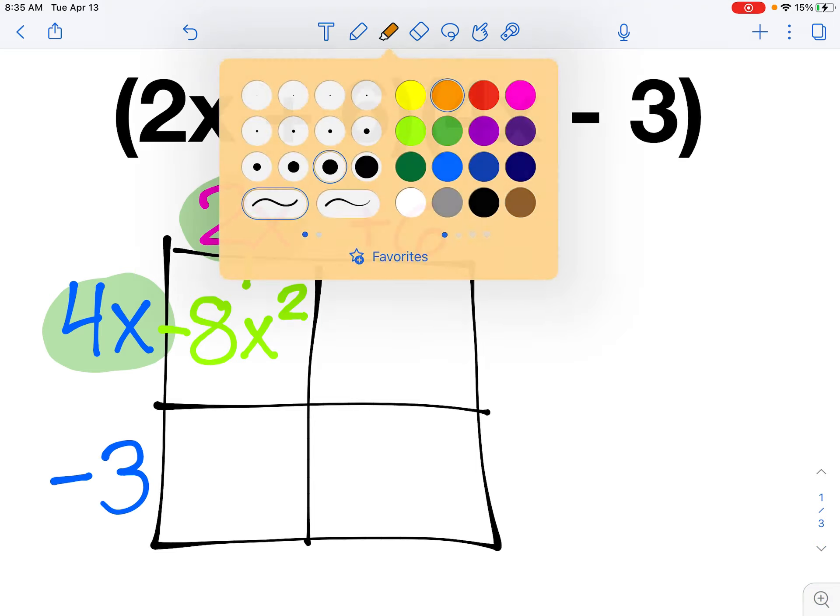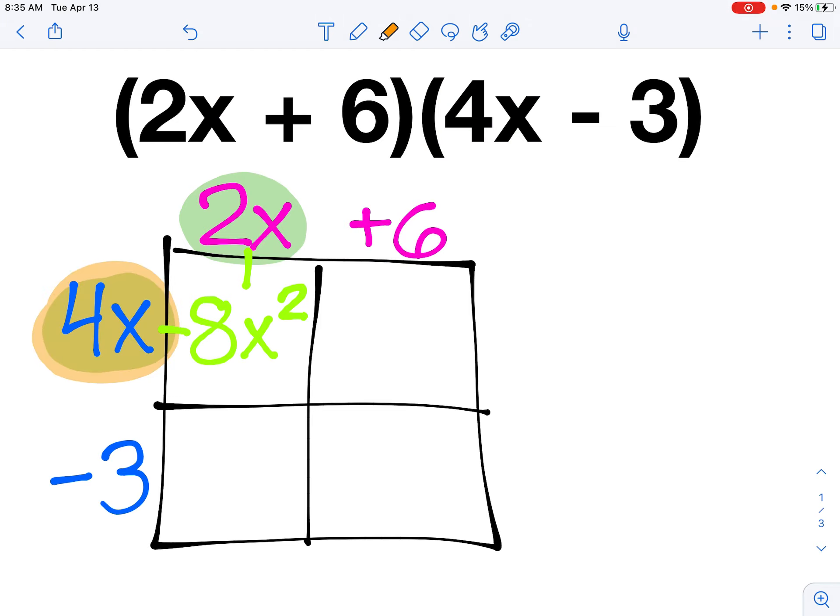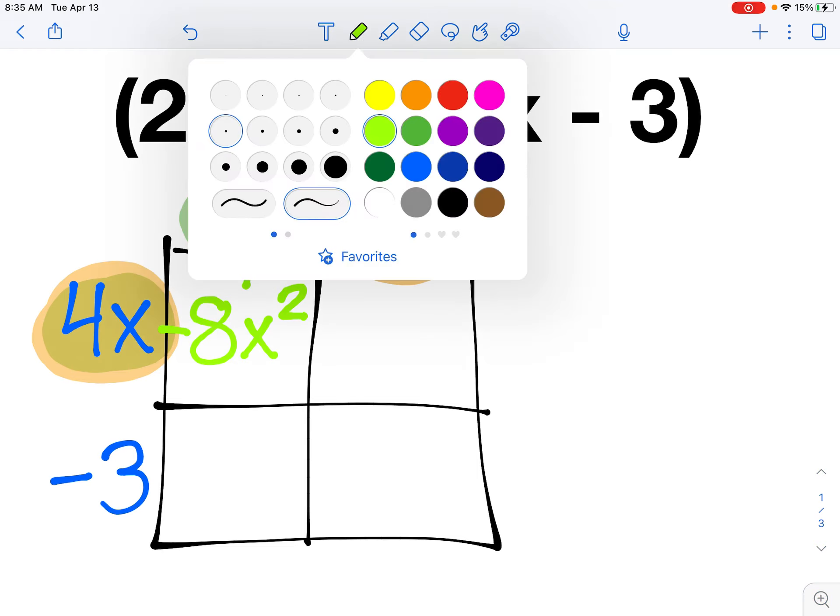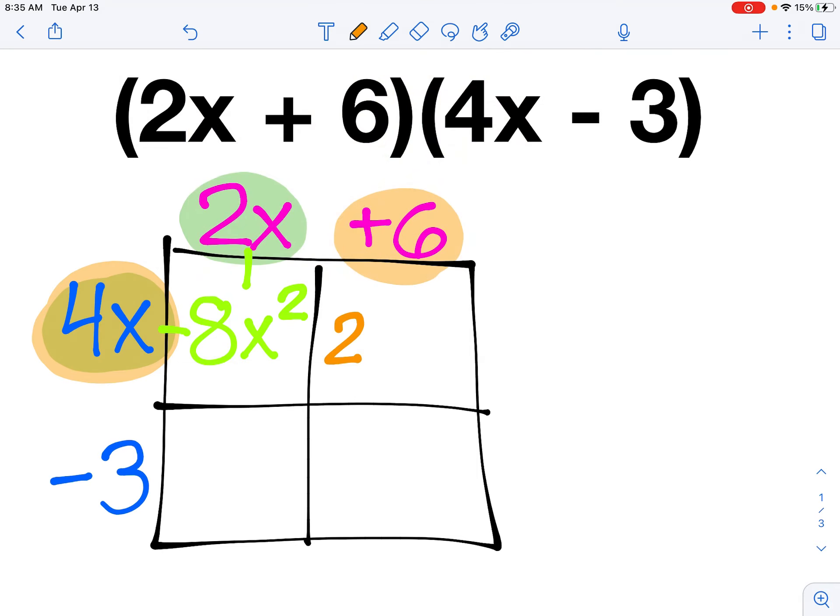So notice how I multiplied these two pieces and filled in the correct box. Now I'm going to move to the next section and multiply 4x by the positive 6, a different pair this time. 4 times 6 is 24. There's only an x on the 4, so I leave it as 24 multiplied by x or 24x.